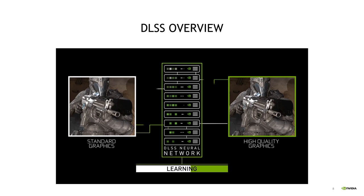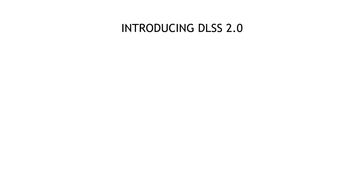The first generation of DLSS was visionary and revolutionary — it's the first ever deep learning algorithm shipped in games. But we know we can still do better. We want better image quality, better performance and faster inference, and better generalization so we don't have to train DLSS per game. So the research behind DLSS continued non-stop, and over the last year we've improved every aspect — the training methodology, loss function, dataset, how the algorithm interacts with the game engine — ultimately redesigning the entire architecture. We're calling this reinvented architecture DLSS 2.0.